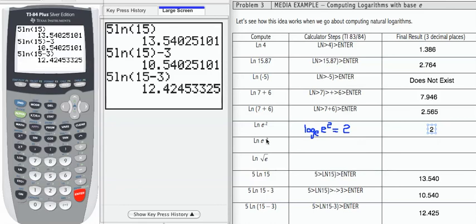For natural log of e to the negative 2, remember I can write that as log base e of e to the negative 2. I'm going to show that here. Log base e of e to the negative 2 equals negative 2 as a result, because e to the negative 2 equals e to the negative 2. So our answer: natural log of e to the negative 2 equals negative 2.